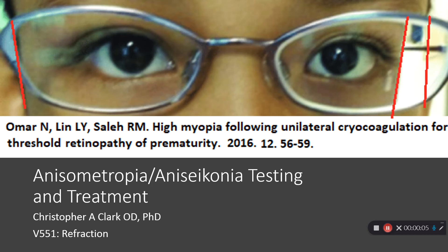This is anisometropia and anisoconia testing and treatment. Here is an example of a child with anisometropia. If you look at the magnification of the spectacles on each side, the right eye has very little magnification difference. The left eye, after retinal detachment surgery and other treatments, now has significant myopia, resulting in a magnification difference between the two eyes. Her left eye is minimized relative to her right eye.